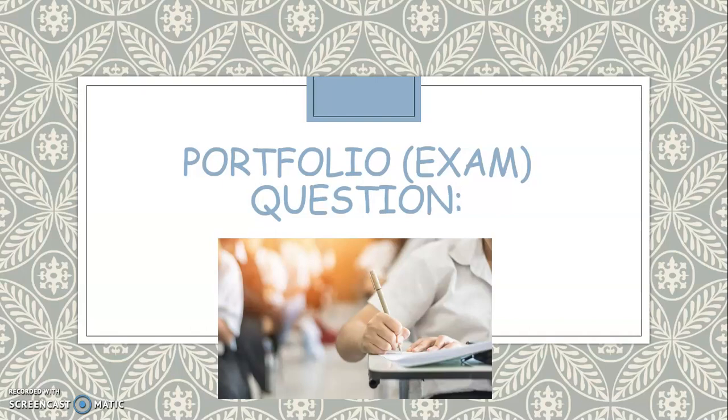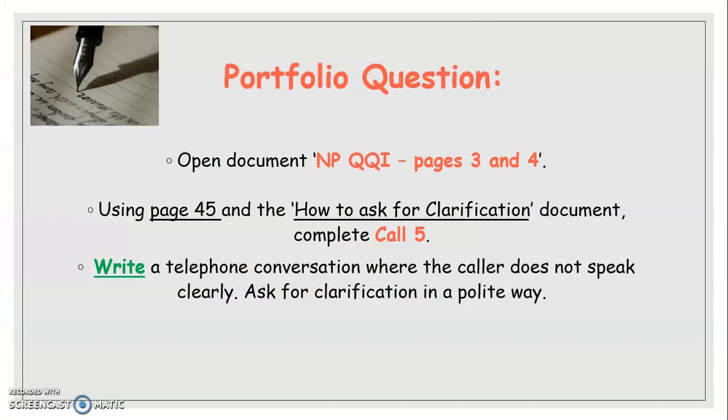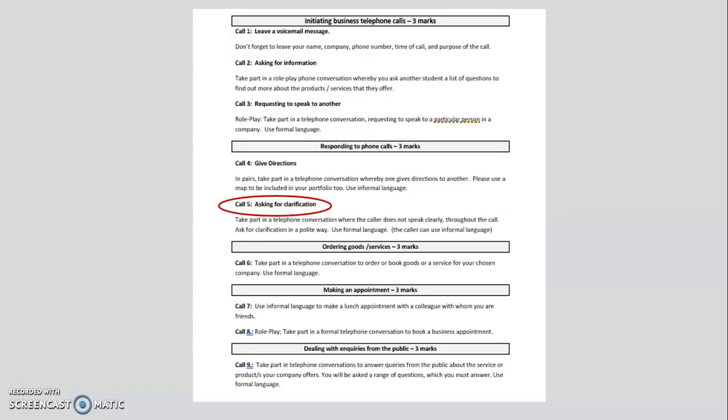Okay, and guys, this brings us on to the portfolio or the exam question. So, open the National Pen QQI pages three and page four document. And using page 45 and the how to ask for clarification document, complete call five. Write a telephone conversation where the caller does not speak clearly. Ask for clarification in a polite way. And this is that document and this is call five, asking for clarification. Take part in a telephone conversation where the caller does not speak clearly throughout the call. Ask for clarification in a polite way. Use formal language. But the caller can use informal language if you would like. So guys, again, write the conversation. Send it to me and I will put it into your portfolios for assessment. You can pause this video here while you complete that exercise.